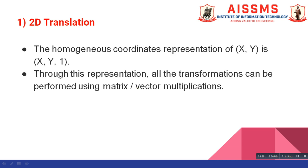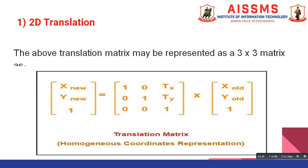The homogenous coordinates representation of X comma Y is X comma Y comma 1. Through this representation, all the transformations can be performed using matrix or vector multiplications. Our old translation matrix can be represented as 3 by 3 matrix as follows. And it is called as homogenous coordinates representation.